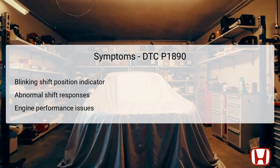When DTC P1890 is present, several symptoms may manifest, offering clues to the problem's nature. One of the most immediate indicators is a blinking shift position indicator on the dashboard, signifying that the TCM has detected a fault. Drivers may also experience abnormal shift responses, noticing delays or harsh transitions when changing gears. In some instances, these symptoms can lead to reduced engine performance, as the discrepancies in the CVT operation compromise the vehicle's ability to adjust power efficiently. Drivers may find that the Civic struggles to accelerate smoothly or maintains inadequate power delivery. Recognizing these symptoms early can assist in timely diagnosis and repair of the CVT system.